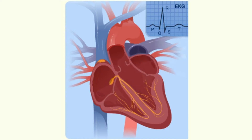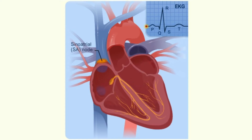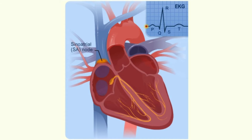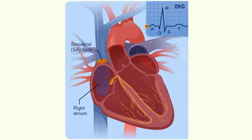Each beat of your heart begins with an electrical signal from the sinoatrial node, also known as the SA node. The SA node is located in your heart's right atrium.